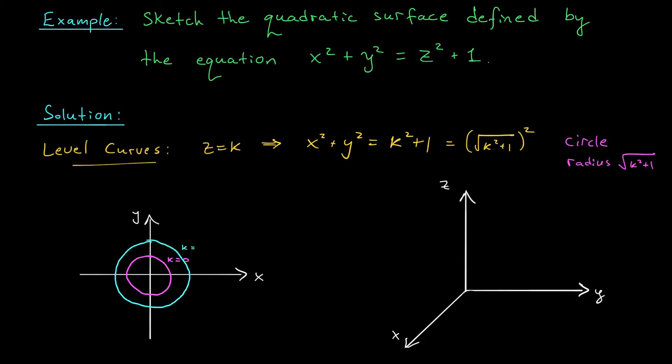Now notice that since k is squared, I would actually get the exact same circle at a height of negative 1. When k is negative 1, I again get a circle of radius √2. If I take k equals 2, I'm going to get a circle of radius √5. It gets a little bit larger. And I would get the exact same circle for k equals minus 2. I think we get the idea.